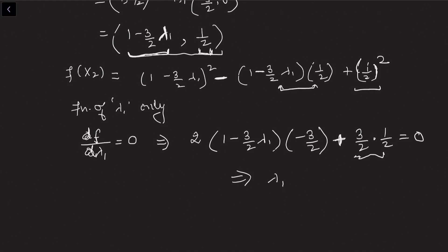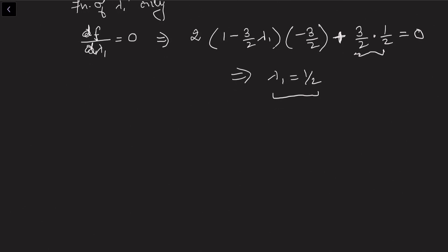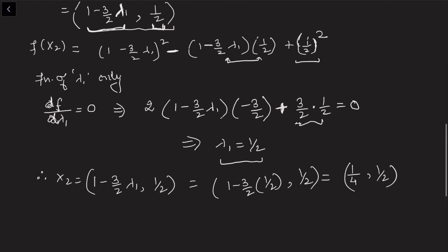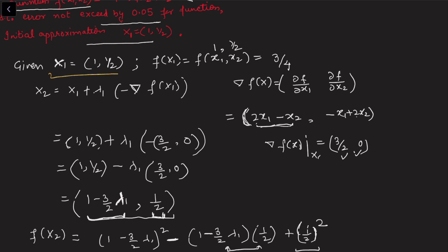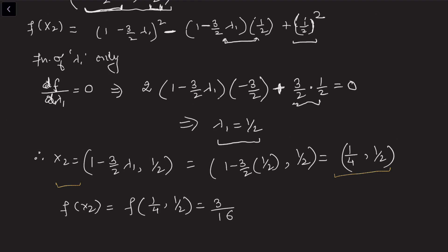With λ1 = 1/2, we substitute back: x2 = (1 − (3/2)(1/2), 1/2) = (1/4, 1/2). Now we calculate the function value at x2: f(1/4, 1/2) = (1/4)² − (1/4)(1/2) + (1/2)² = 3/16.